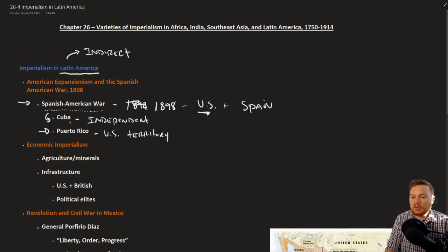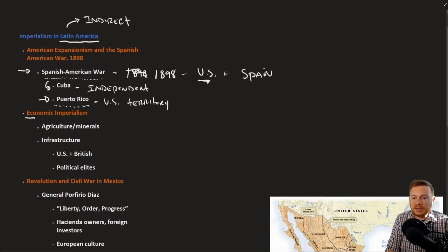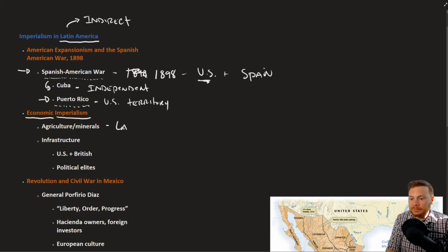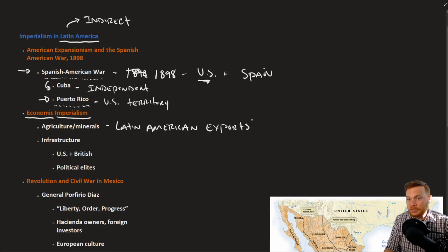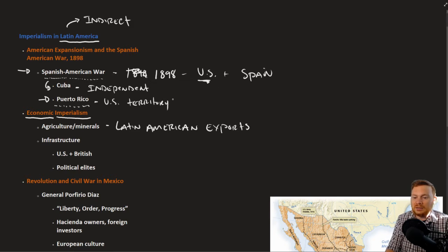Puerto Rico did not retain its independence — it's an exception to the indirect imperialism theme in Latin America. We can also refer to indirect imperialism as economic imperialism: outside countries reap economic benefits from Latin American agriculture and minerals such as silver, gold, tin, and copper. If countries like the United States, Britain, or France could benefit from Latin American agriculture and minerals, there was no need to necessarily overthrow governments.